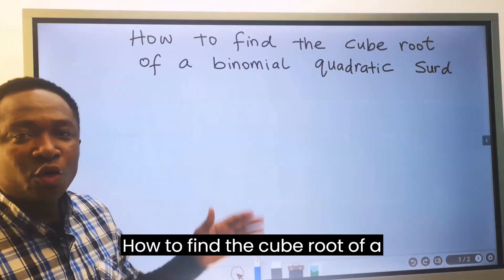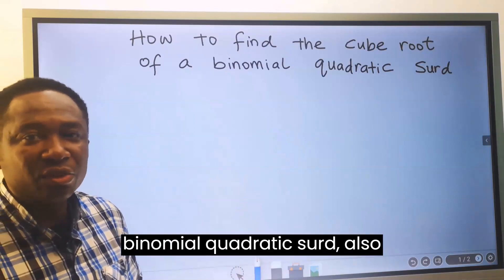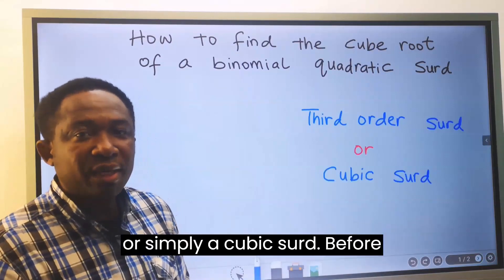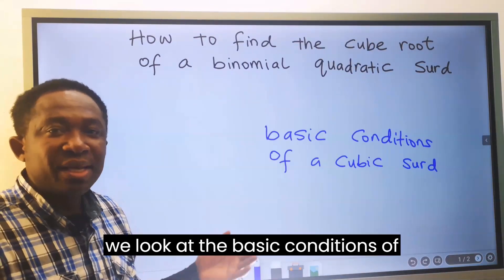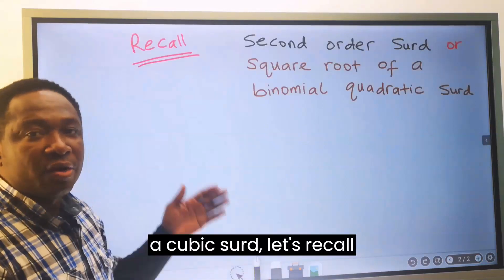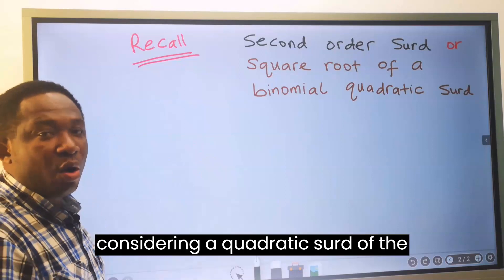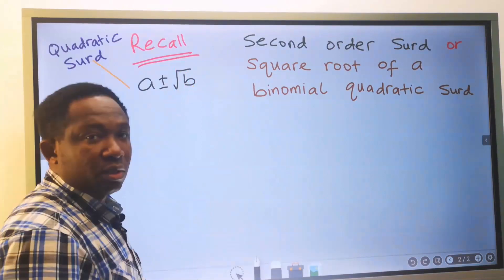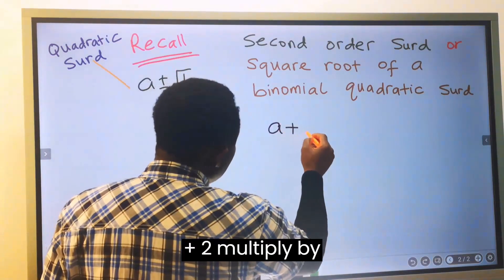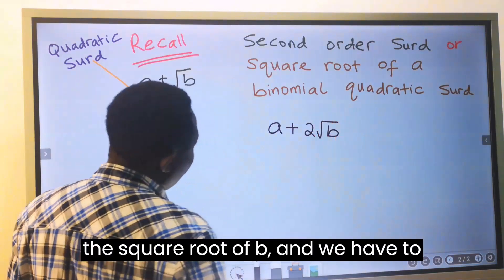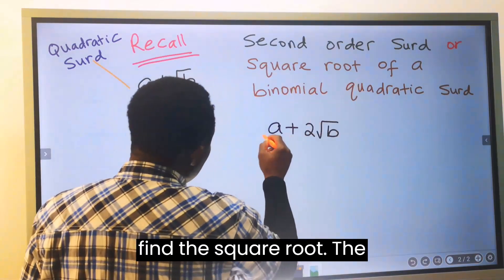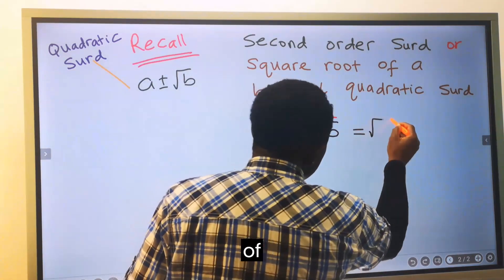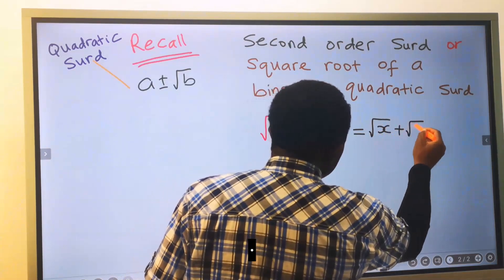How to find the cube root of a binomial quadratic surd, also known as a third-order surd, or simply a cubic surd. Before we look at the basic conditions of a cubic surd, let's recall: considering a quadratic surd of the form A plus or minus the square root of B — if we have A plus 2 multiplied by the square root of B and we have to find the square root, the answer will be in the form of the square root of X plus the square root of Y.